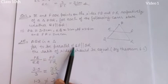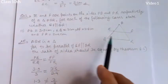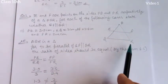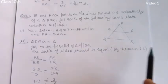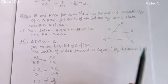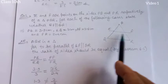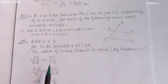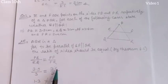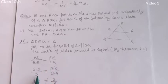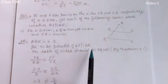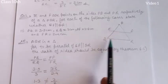For triangle PQR, to check whether EF is parallel to QR, the ratio of the sides should be equal. By using the converse of theorem 6.1, check the ratio: PE upon EQ and PF upon FR. Replacing values: PE is 3.9, EQ is 3, PF is 3.6, and FR is 2.4. After solving, the left-hand side does not equal the right-hand side. So the ratio is not equal, which means line EF is not parallel to QR.